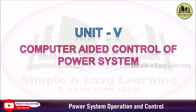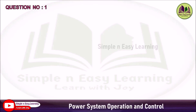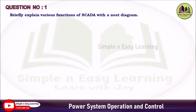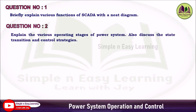Unit 5: Computer Aided Control of Power System — Question 1 (Priority 1): SCADA — explain briefly what SCADA is, the functions carried out in the SCADA unit, and the remote terminal unit. This is very important; study it with the complete block diagram.